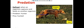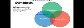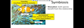The third community interaction is symbiosis. Symbiosis means a relationship where two species live closely together. There are three types of symbiotic relationships: mutualism, commensalism, and parasitism. The first relationship is mutualism, which means that both species benefit from the relationship — a 50/50 beneficial relationship.